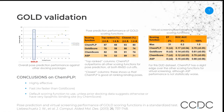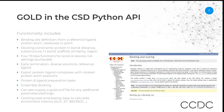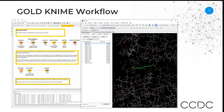ChemPLP is used as the default scoring function since it is both best performing and the fastest one. We allow modifications to the GOLD setup through the Python API, so all constraints and configurations can be set up programmatically. We also allow for various integrations of GOLD. Recently, we made available a KNIME workflow in GOLD, so one can start with a set of ligands in 2D — in SMILES — and then convert them to three-dimensional structures and run GOLD using such a workflow.